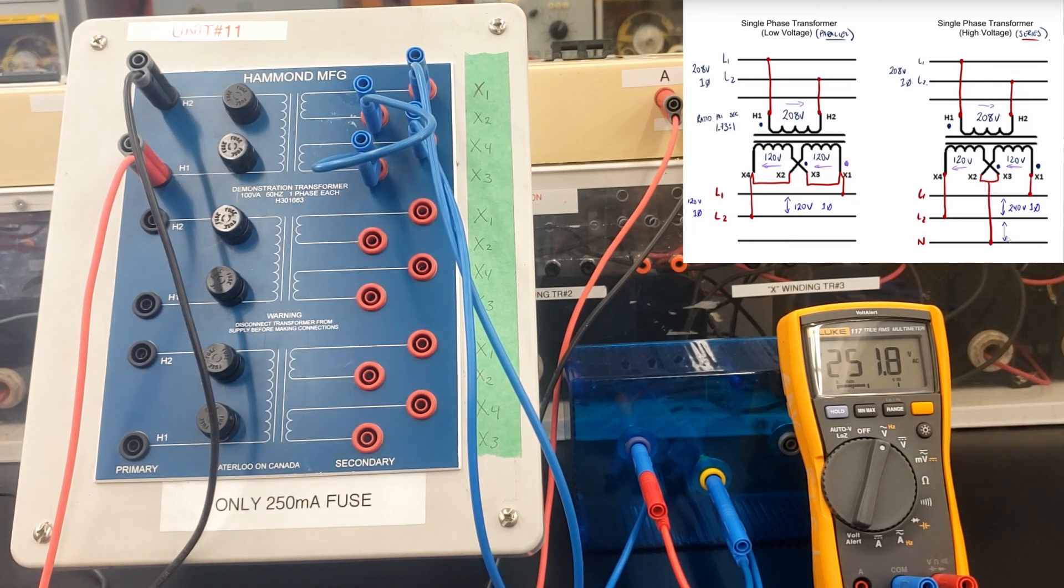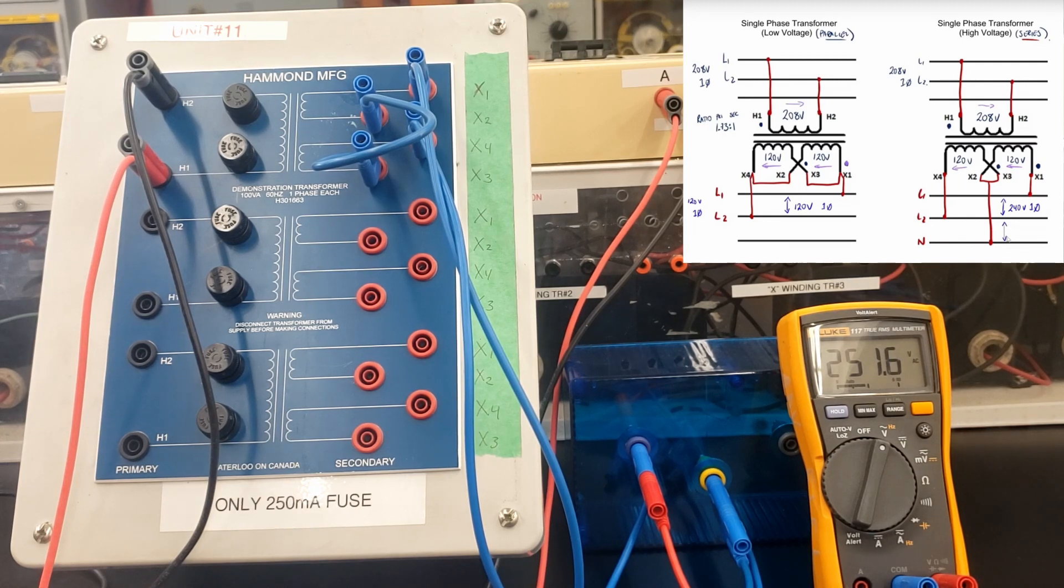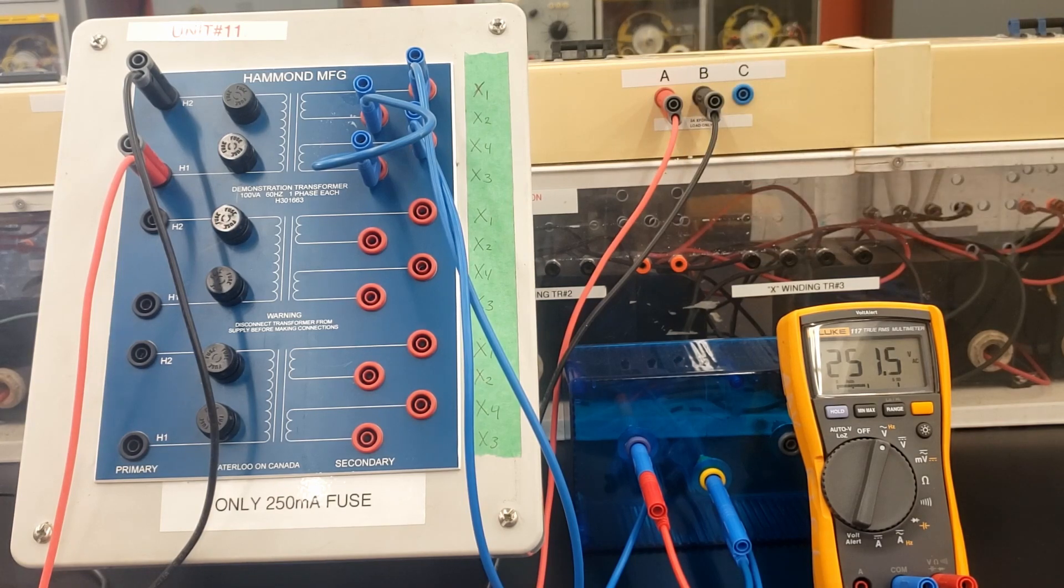Those are your first single-phase transformer projects. In the next video, we're going to go over the three-phase. What are we starting off with the three-phase? Number of questions in your transformer manual to finish up. Looks like we're going to do on project number three on page 23. We're going to do an open delta to open delta. So, we'll see you in the next video for that.